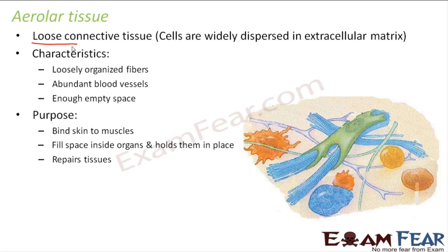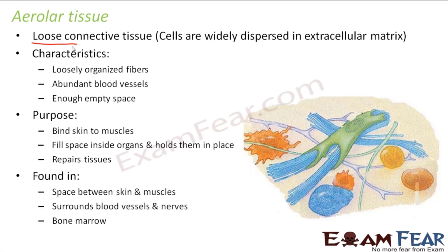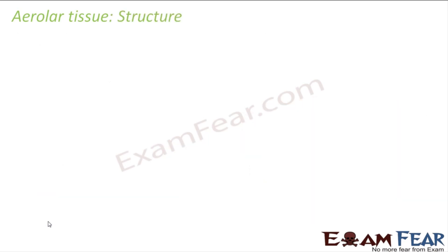Areolar tissue is most widely found in vertebrates. It is both a strong and flexible tissue. Its appearance can sometimes look similar to dense connective tissue because at some places it has many fibers, though it is still areolar tissue. It is found in the space between skin and muscles, surrounding blood vessels and nerves, and in the bone marrow.